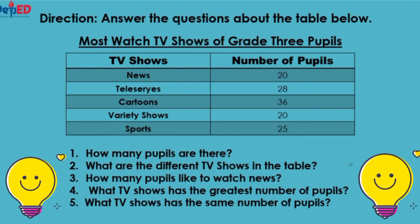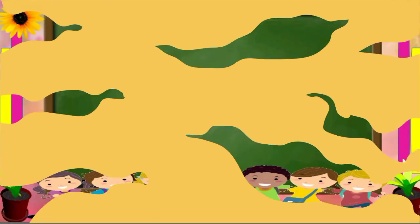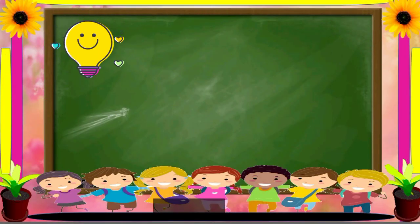For your last activity, read and study the table below, then answer the questions. Number one, how many pupils are there? Number two, what are the different TV shows in the table? Number three, how many pupils like to watch news? Number four, what TV show has the greatest number of pupils? Number five, what TV shows have the same number of pupils? Check your work using the following answers.